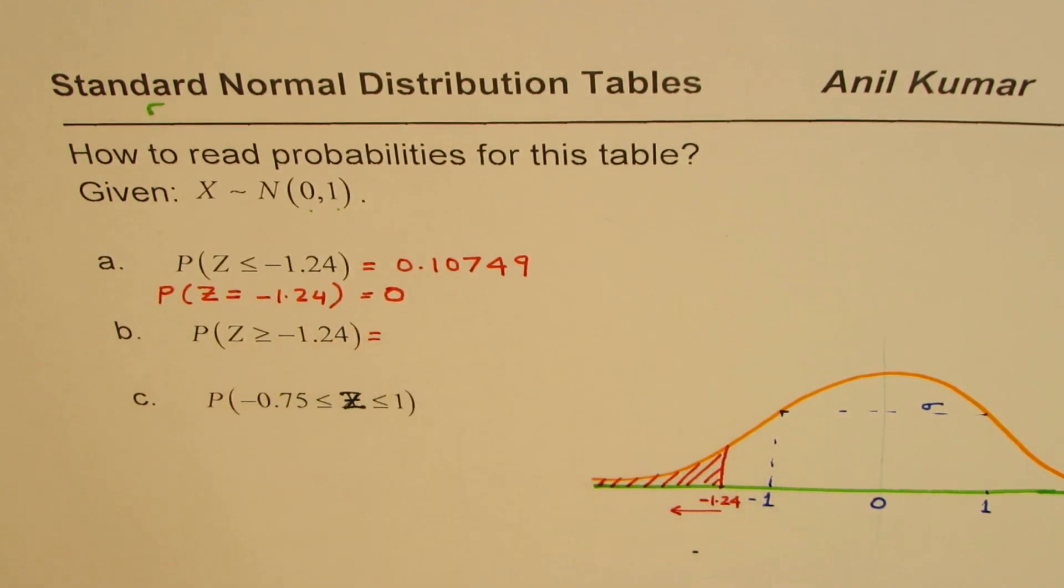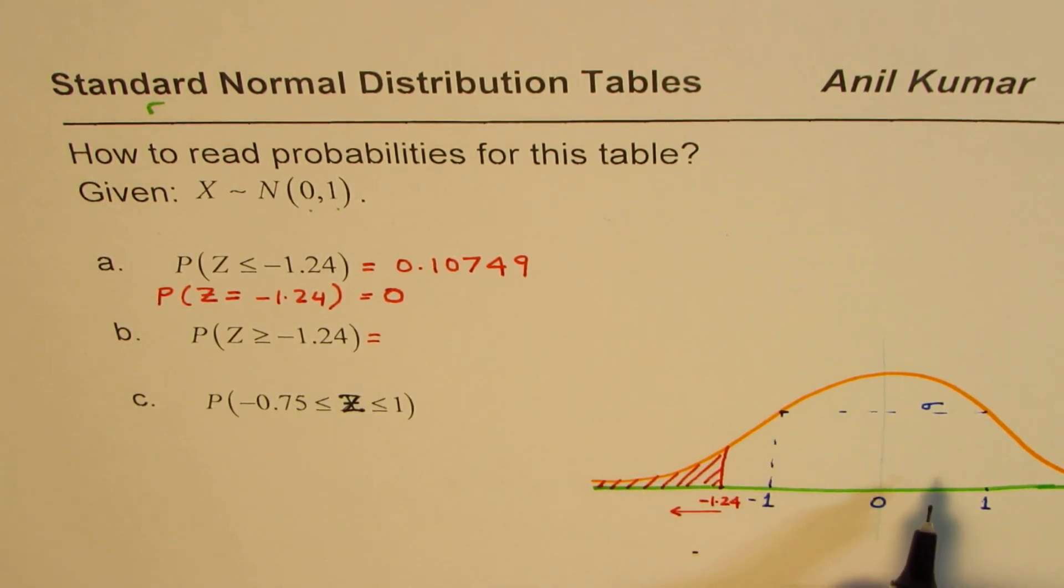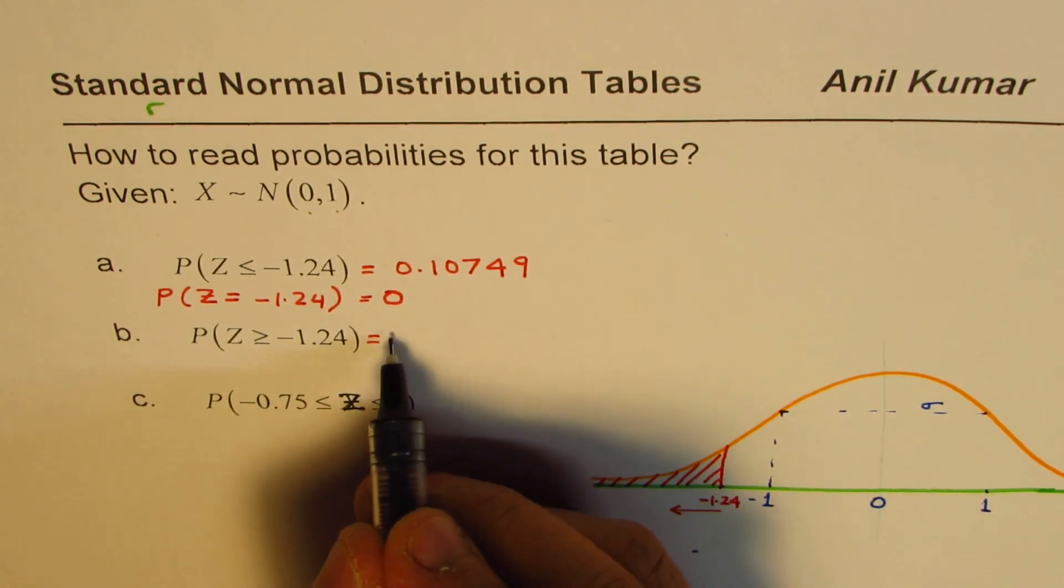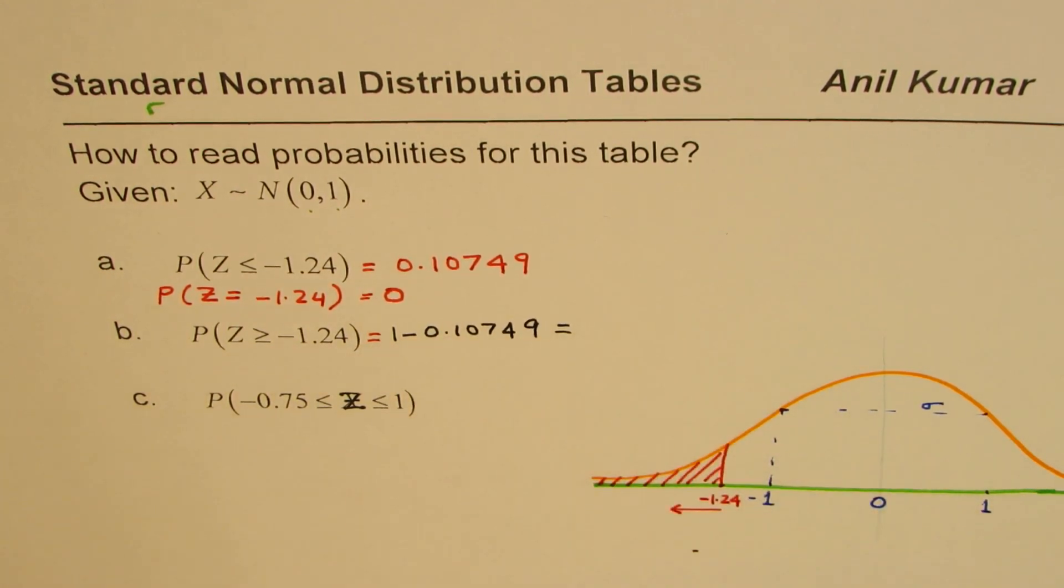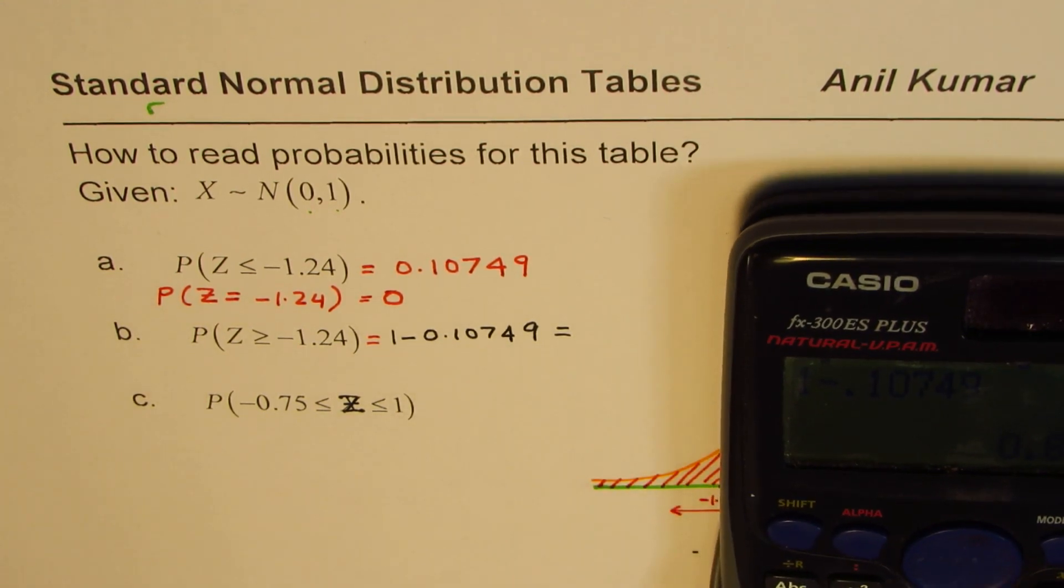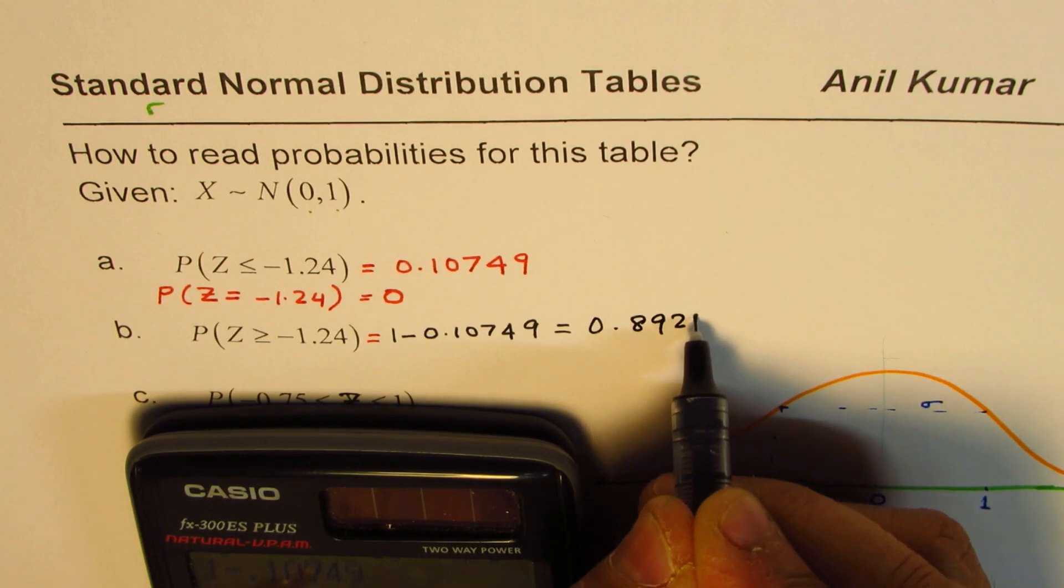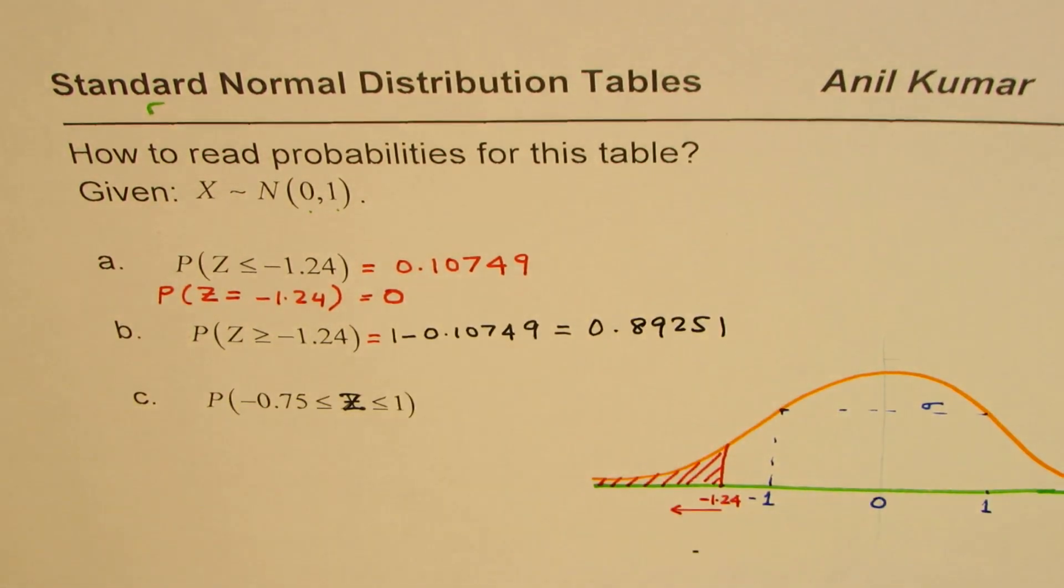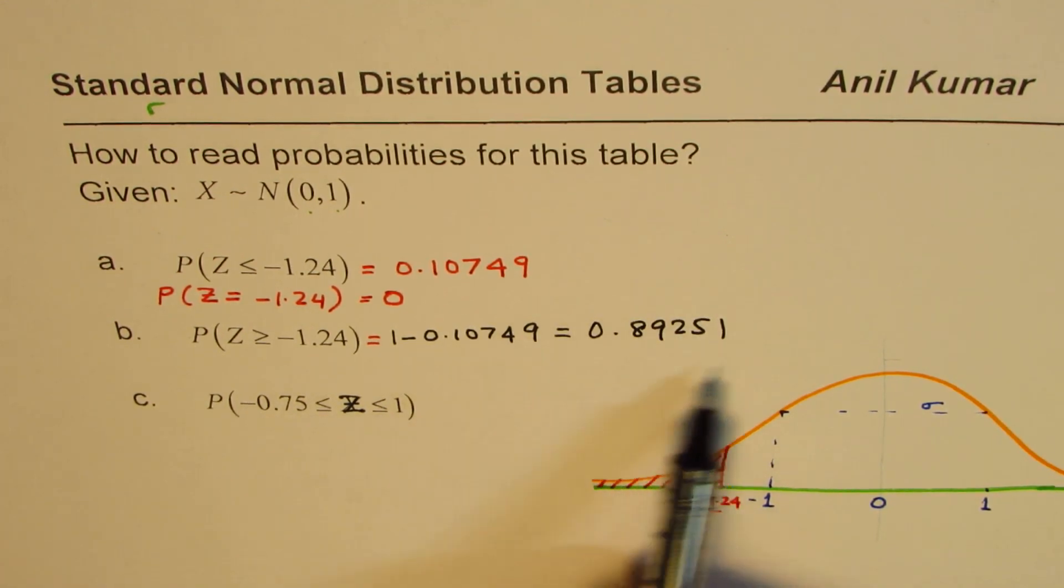So now it is easy to answer the next question. Total area is 1. So to the right side of this, area should be 1 minus 0.10749. So let us calculate this. So it is 1 minus 0.10749, and that gives us a value of 0.89251. So normally they are given to five decimal places. You could always write to three or four decimal places.